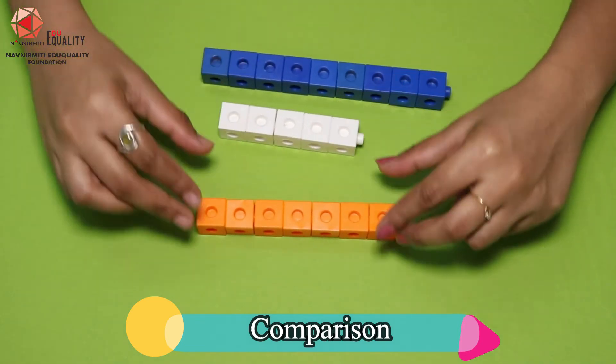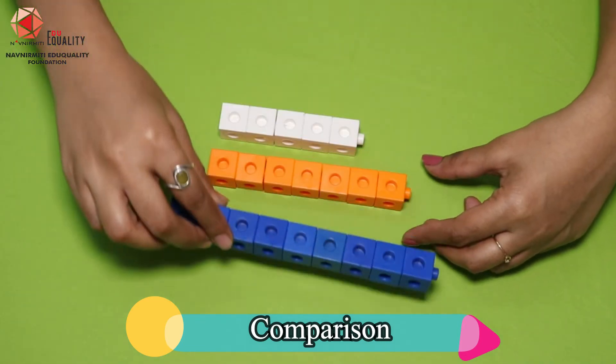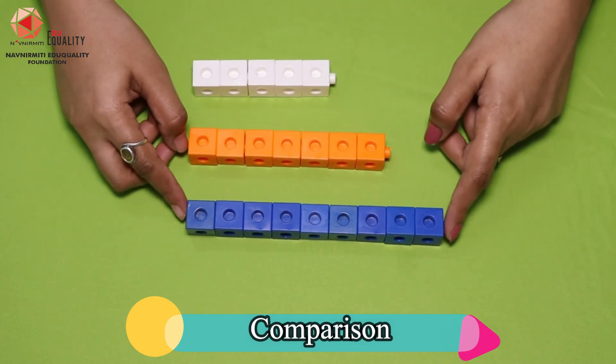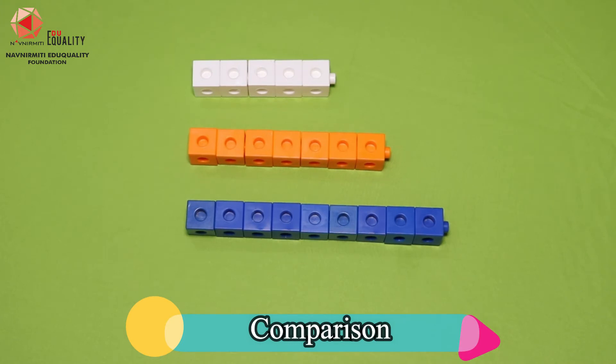If we arrange the three towers in order, we can see that the blue tower is tallest among all three, orange is taller than the white blocks, and white one is the shortest.